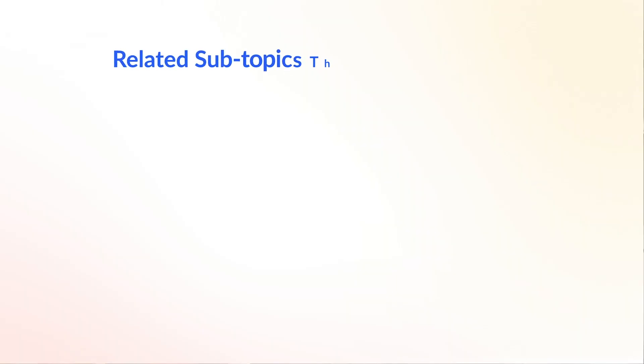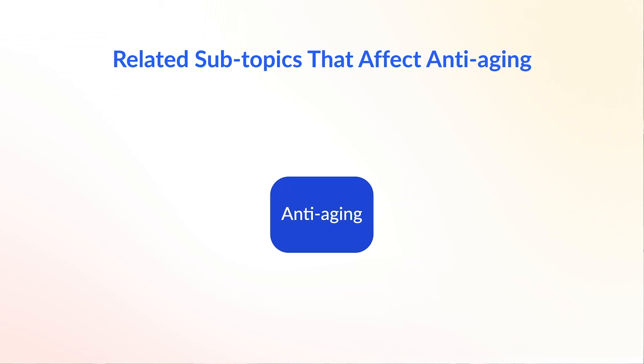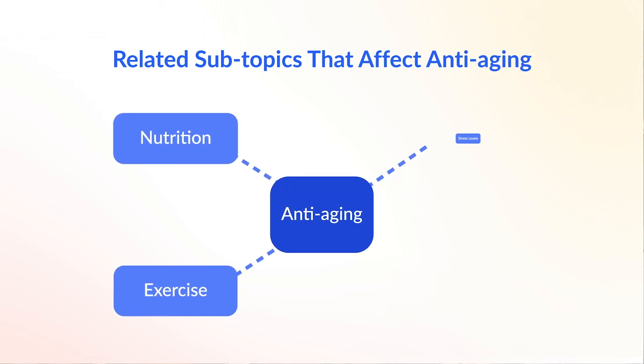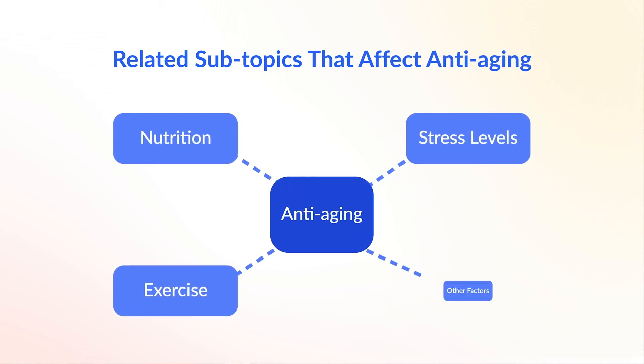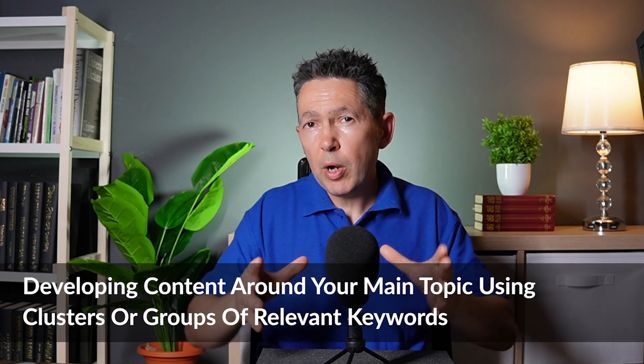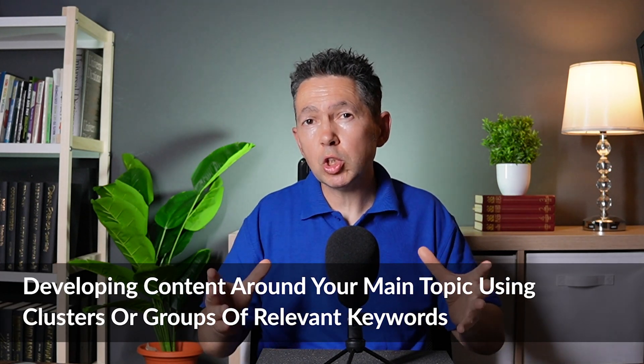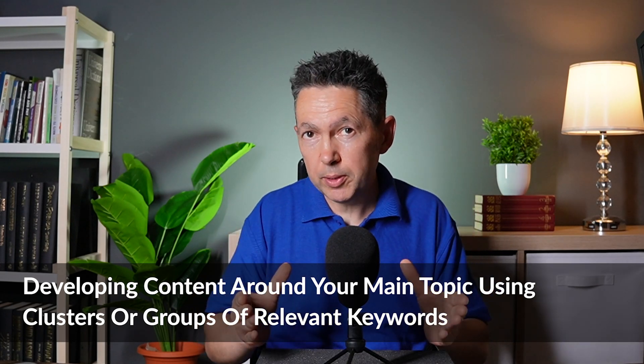For example, take the anti-aging topic. There are many subtopics that affect anti-aging, such as nutrition, exercise, stress levels, and so on. Creating content on all the subtopics around your main topic gives your website topical authority, and that can help you dominate a niche. This is what modern SEO is all about — developing content around your main topic using clusters or groups of relevant keywords.